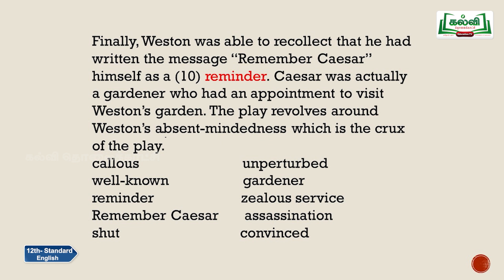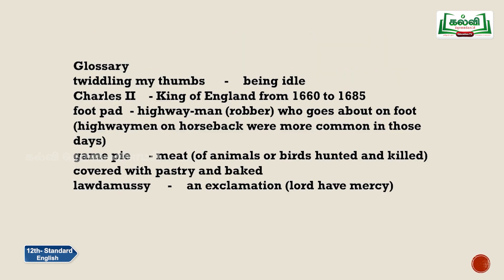Now let us move on to the glossary. 'Twiddling my thumbs' means being idle — not doing anything, simply spending time in idleness. Charles II was King of England from 1660 to 1685. 'Footpad' refers to the highwayman — a robber who goes on foot, as opposed to the more common highwaymen on horseback. There is a lovely poem called The Highwayman.